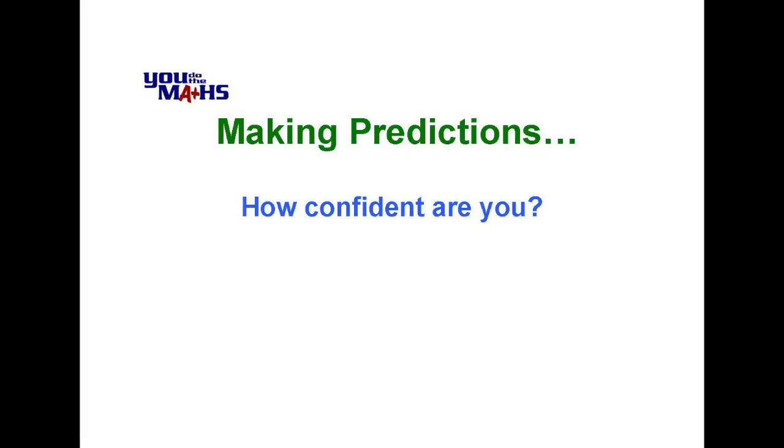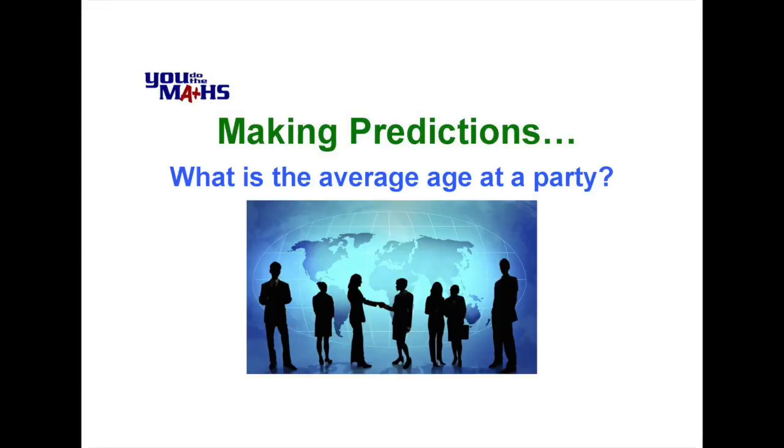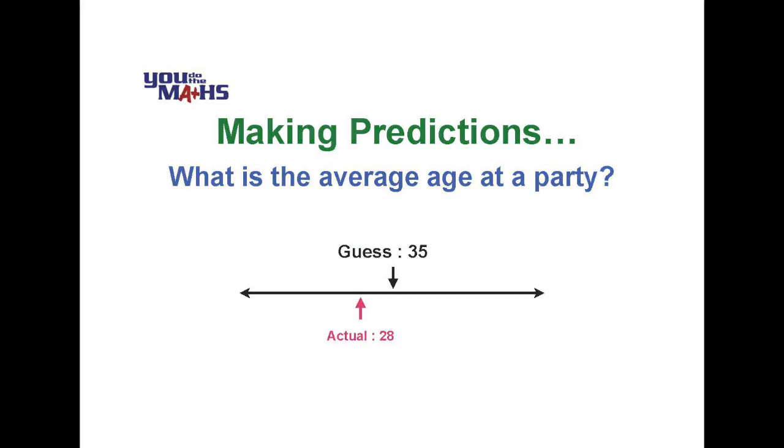To introduce the idea of confidence intervals, let's look at a situation where we're at a party and want to guess the average age of the people attending. For our first guess, we might say the average age is 35 and we'd be pretty lucky to get it right the first time. For comparison, we'll put the actual age there as 28. We don't know that when we guess, but we'll keep that in mind.